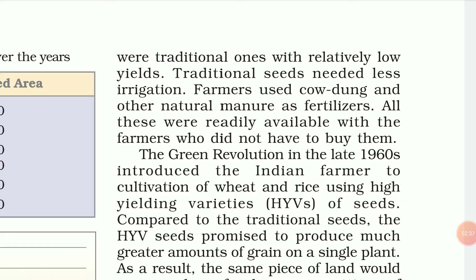Since seeds and fertilizers were all available at home, no capital was required for farming. Seeds were available at home, fertilizer was available at home, and water was also not required in large amounts. With the traditional irrigation facility, farmers could grow crops without any additional expenditure.